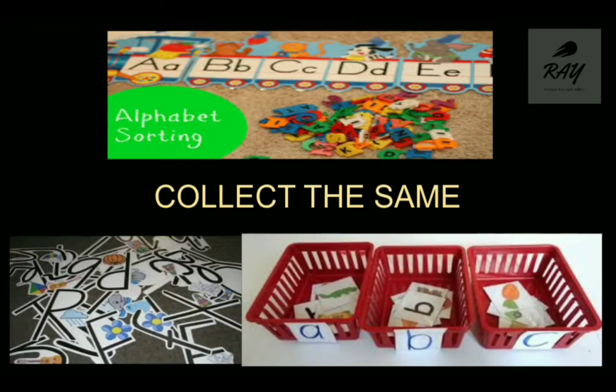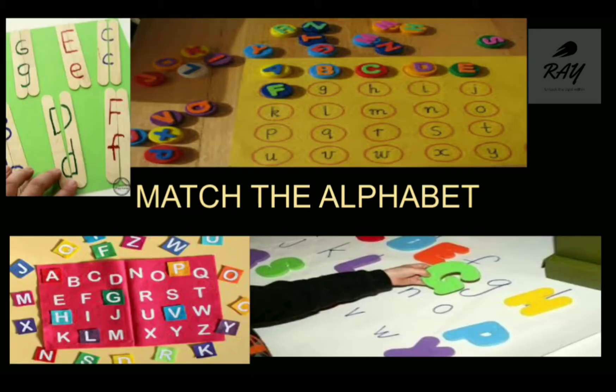The second activity is 'Collect the Same.' Different letters are written on pebbles and the kids have to group those letters — all A's together, all B's together, all D's together. This can be done with pebbles, flashcards, or railway tracks with different compartments of capital and small letters. Children can be given tokens or flashcards to match, place in a basket, or drop into a piggyback.